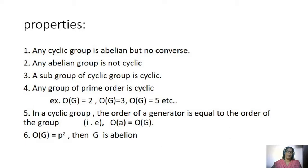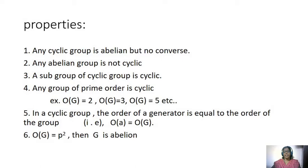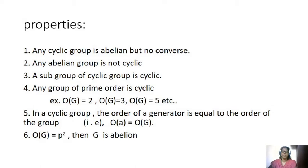2, 3, and 5 are prime numbers, so groups of those orders are cyclic groups. In a cyclic group, the order of a generator equals the order of the group: order of A equals order of G. Also, if order of G equals p², then G is an abelian group.